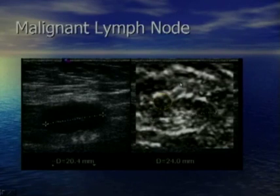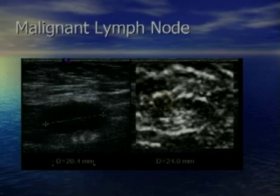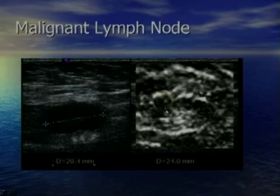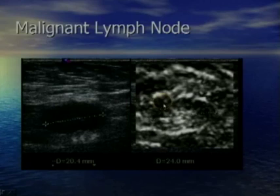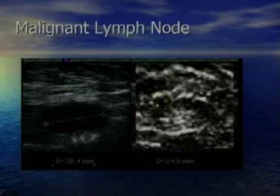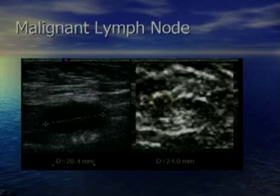We also looked at lymph nodes — we routinely evaluate lymph nodes in patients we think have cancers for staging at initial biopsy. This patient had a somewhat large but otherwise normal-appearing lymph node in her level 2 area. On the elastogram, we saw an area in the upper pole of the lymph node that was persistently much harder and deformed the lymph node. We used a core needle guided by elasticity imaging to biopsy this area, and it was a focus of malignancy within the lymph node.